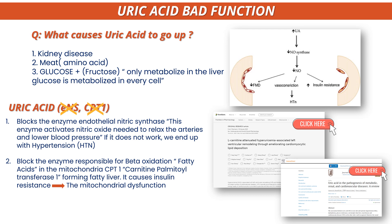Let's start with enzyme number one: endothelial nitric oxide synthase, or eNOS. That enzyme activates nitric oxide, which is needed for arterial and blood vessel relaxation, and therefore lowers your blood pressure. If there is a blockage of this enzyme, the result is hypertension — high blood pressure.